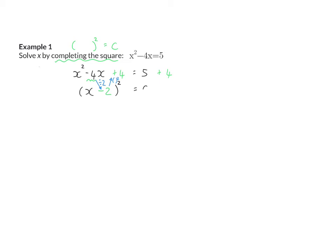If we now simplify the right, we have a bracket squared equal to nine. So we can now take the square root on both sides and end with x minus two equal to plus or minus three. This can now be split up into x minus two is positive three, or x minus two is negative three. So x is five, or x is minus one.